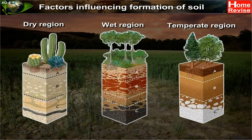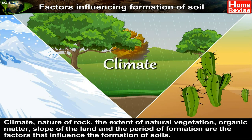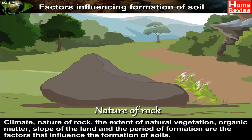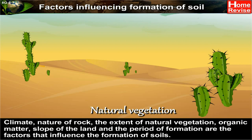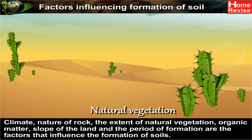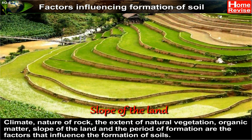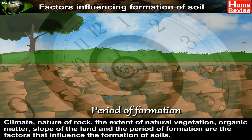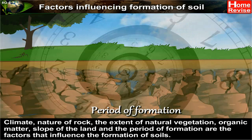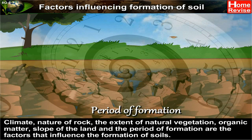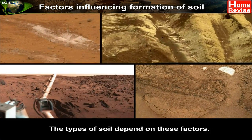Factors influencing the formation of soil: climate, nature of rock, the extent of natural vegetation, organic matter, slope of the land, and the period of formation are the factors that influence the formation of soils. The types of soil depend on these factors.